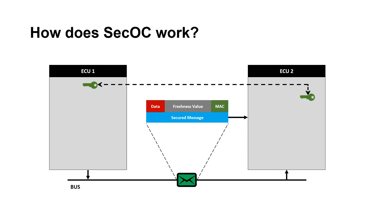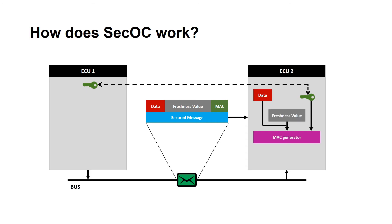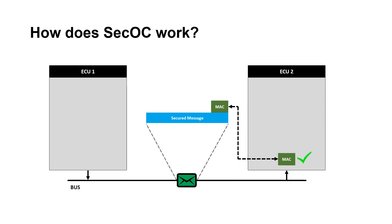At the receiver ECU, i.e. ECU2, the verification process happens this way. The key will already be stored in the internal memory of each ECU. The MAC generator gets the input — the data and freshness value from the incoming message — and generates the MAC again. It will verify the MAC with the received MAC for correctness. If it does not match, that particular message will be discarded. If it matches, the message or data is said to be non-tampered and will be sent to the upper layers.